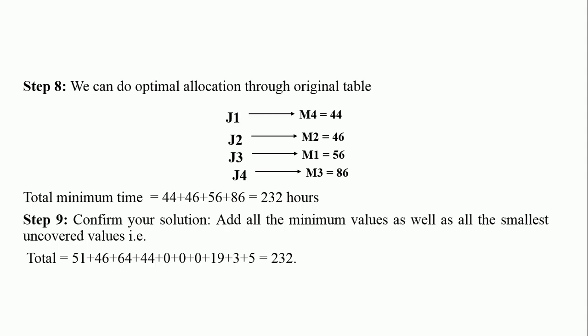If you make any other assignment, the value will always be higher than 232. That is the beauty of the Hungarian method — if you assign contrary to j1 to m4, j2 to m2, j3 to m1, and j4 to m3, you will always get a value greater than 232.